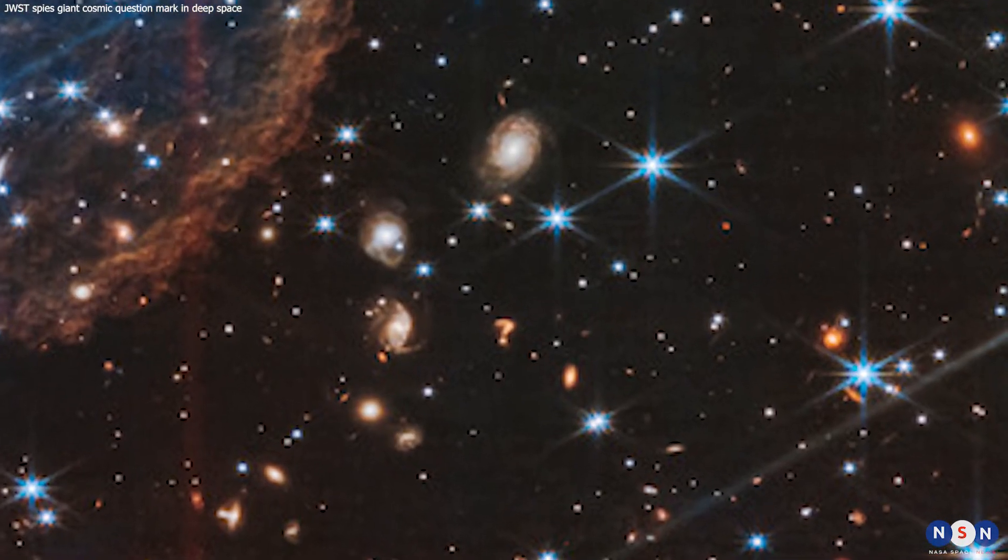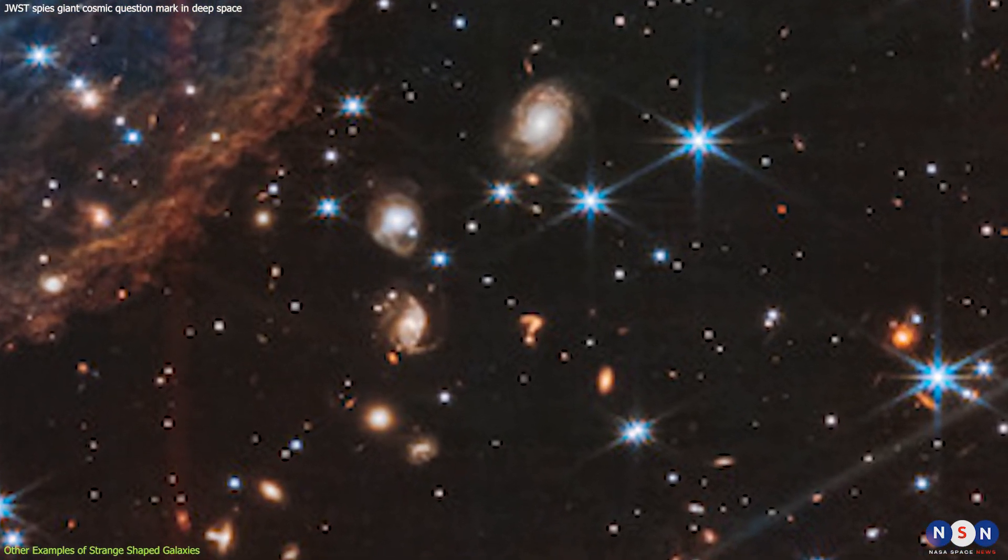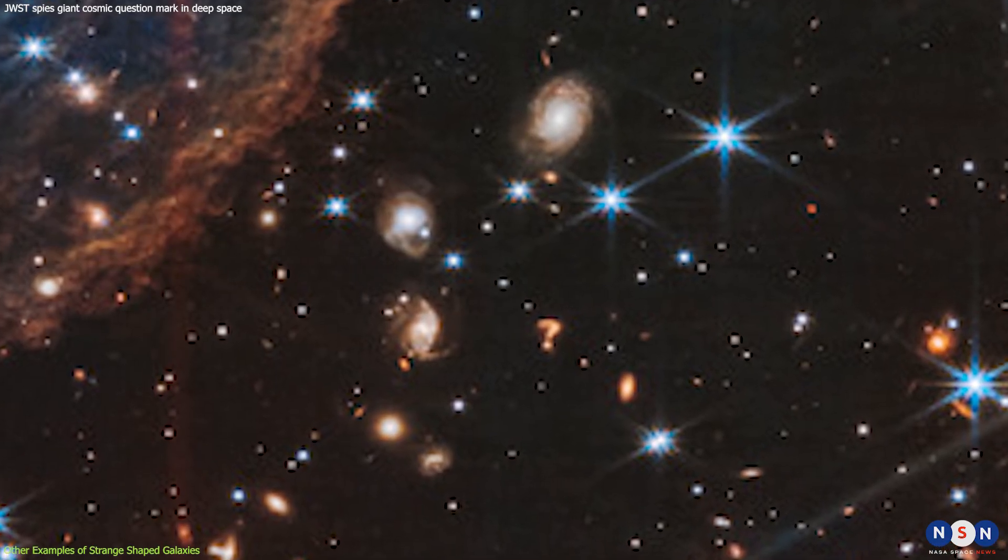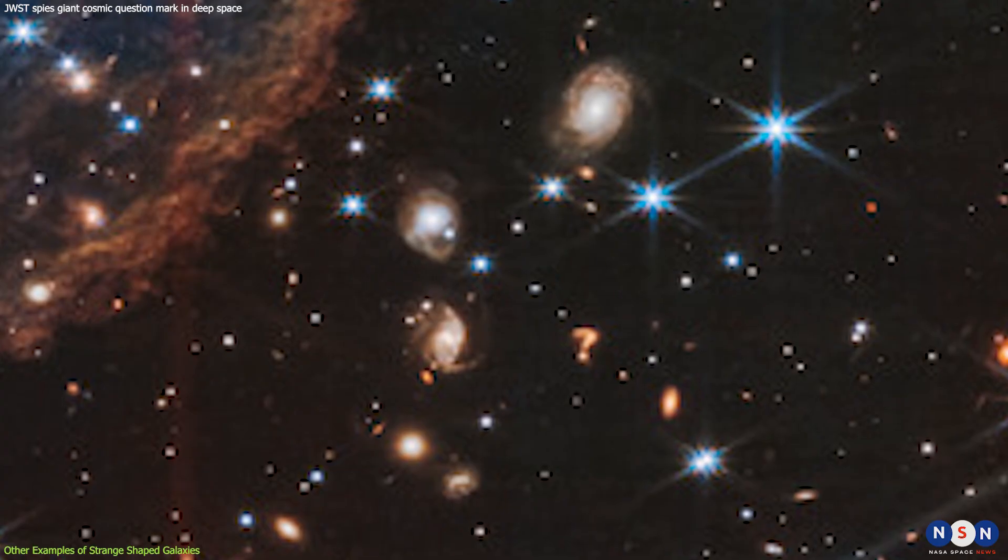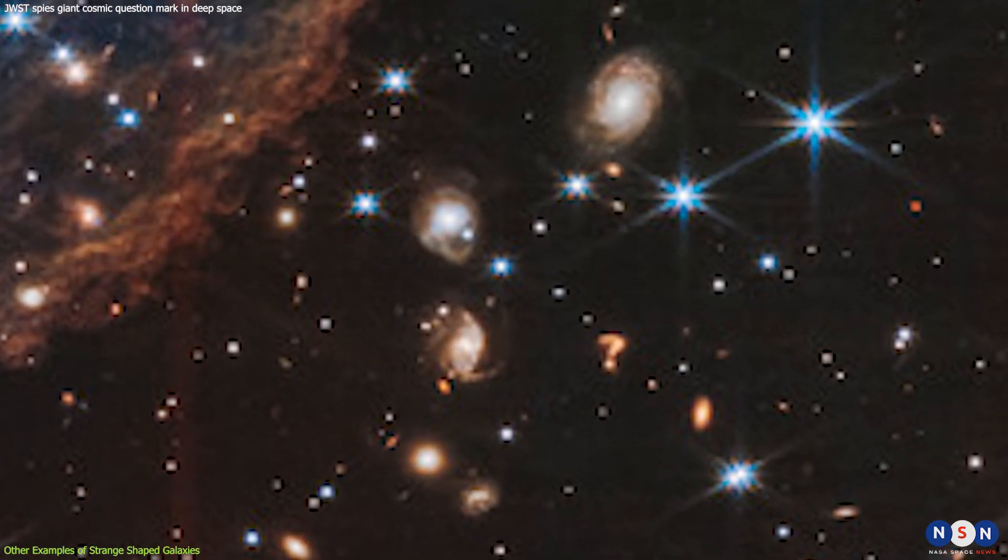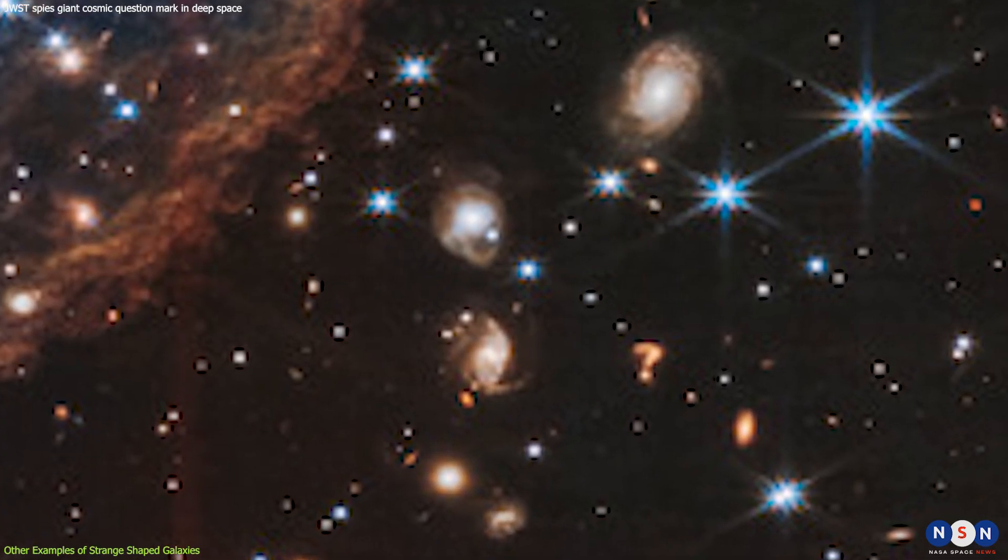The question mark galaxy is not the only example of a galaxy with a strange shape caused by dark matter and gravitational lensing. In fact, there are many other cases where the light from distant galaxies is distorted or magnified by the gravity of massive objects in the foreground, such as galaxy clusters or individual galaxies.